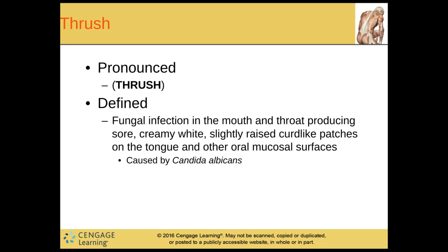And then we have thrush. This is a fungal infection in the mouth and throat producing sore, creamy white, slightly raised curd-like patches on the tongue and other oral mucosal surfaces. It's caused by Candida albicans — like a yeast infection in your mouth. Sometimes babies will get it if the mom is put on antibiotic treatment. There's something called gentian violet — a little tincture — you cover the baby's mouth and treat any surfaces the baby chews on. It usually gets rid of it, though it stains everything bright purple.